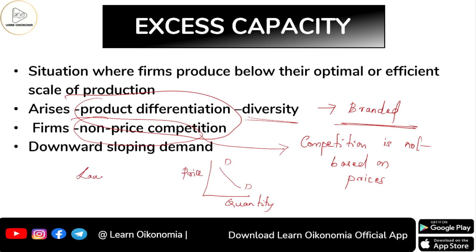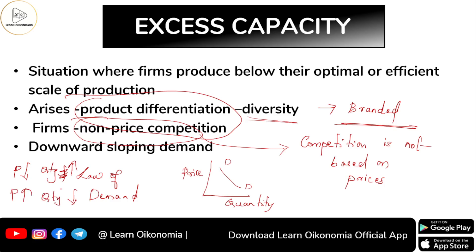The downward sloping demand curve reflects the law of demand: when other things remain the same (ceteris paribus), there is an inverse relationship between the price of a commodity and quantity demanded. When price increases, quantity demanded falls; when price falls, quantity demanded increases.